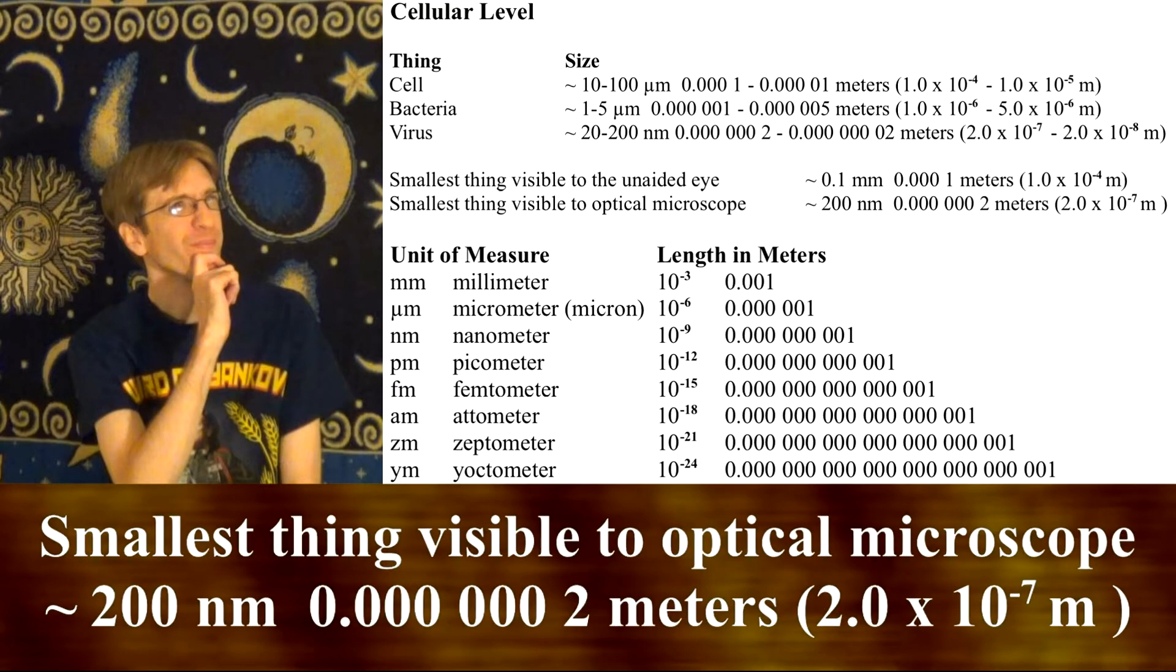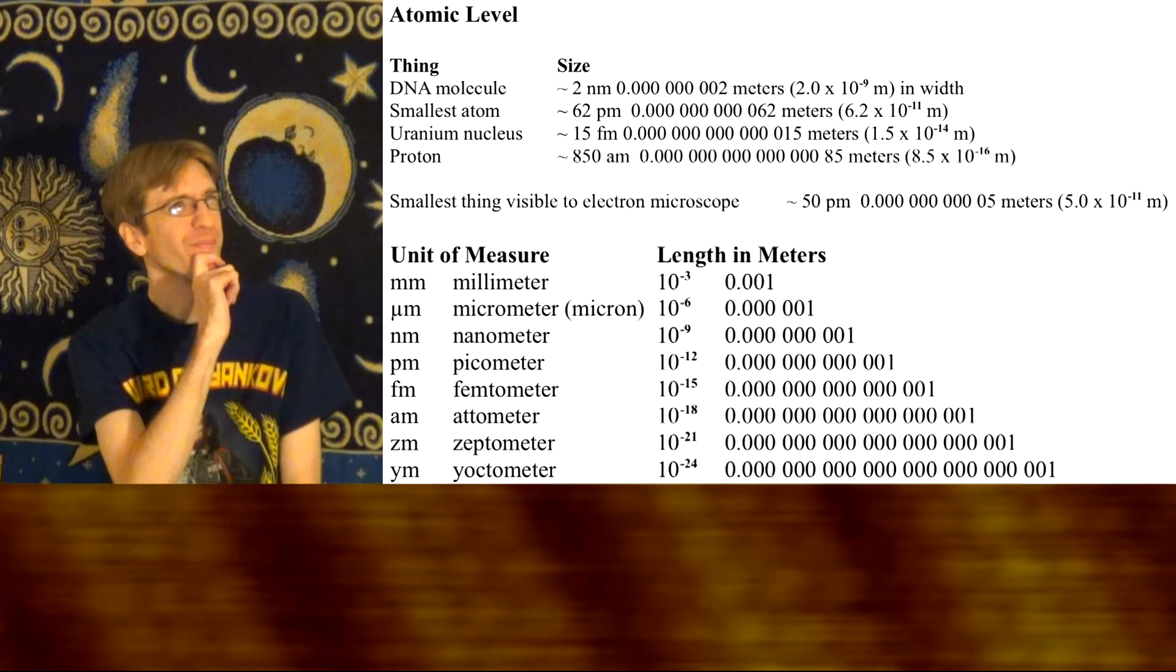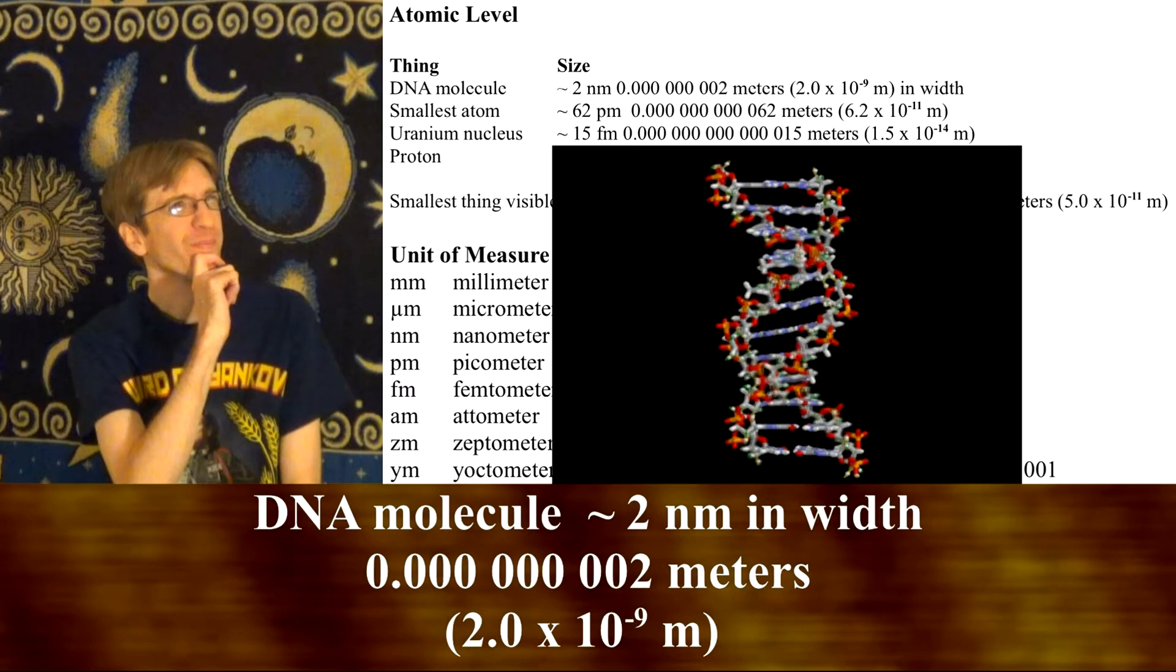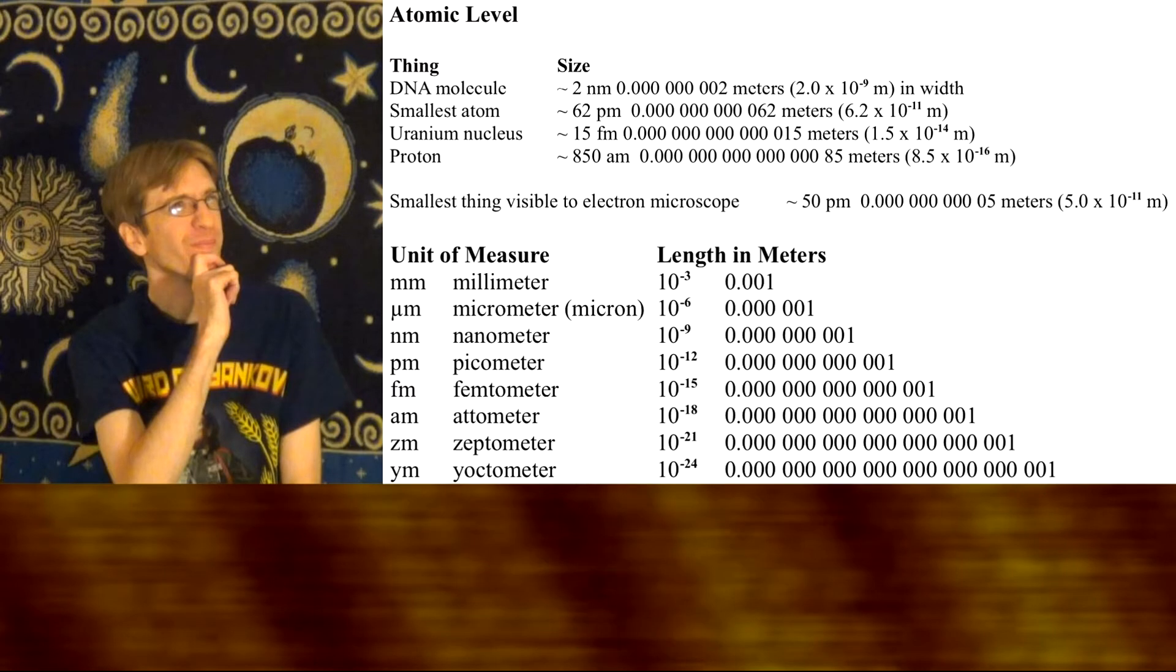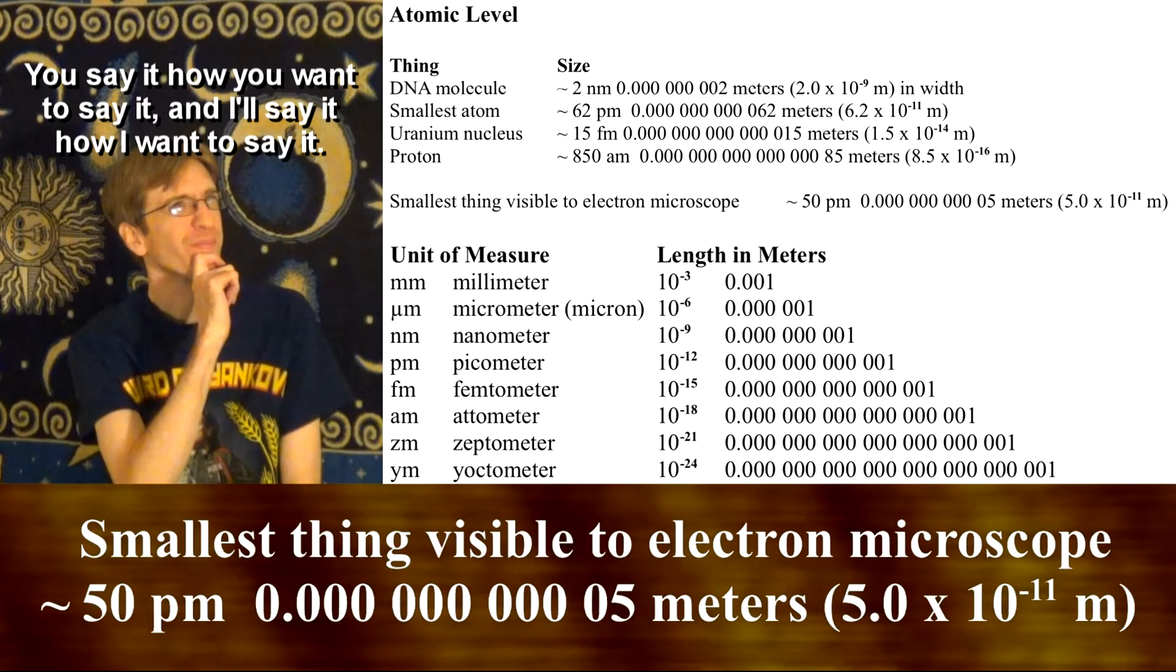The largest viruses are the smallest things that you can see with an optical microscope. Now we enter the atomic level with the width of a DNA molecule at about 2 nanometers in size. The smallest atom is about 62 picometers in size, which is also the smallest thing visible to an electron microscope.